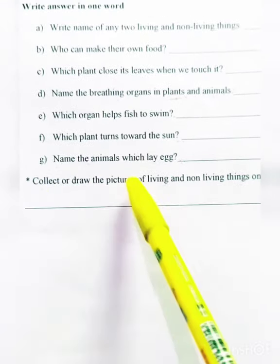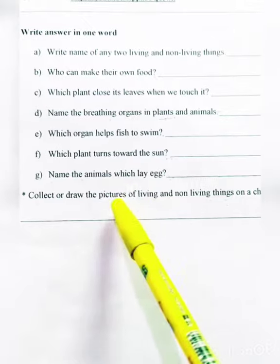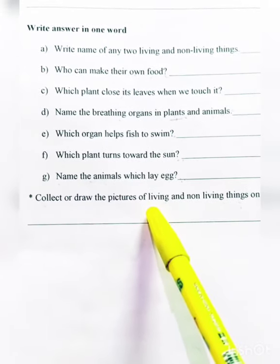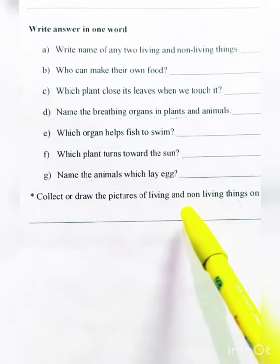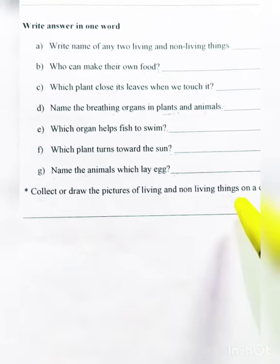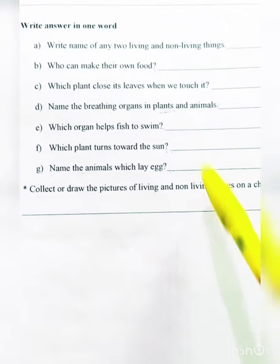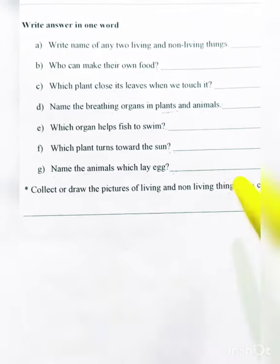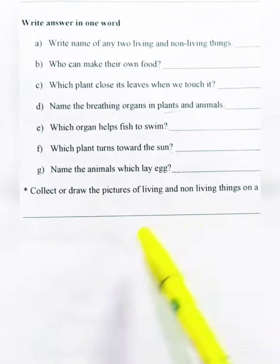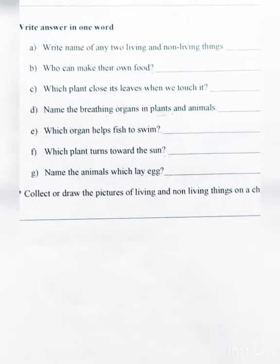Collect and draw pictures of living and non-living things on a chart paper. If you don't have pictures, you can draw and paste them on your A4 sheet or chart paper. Label each item and identify whether it is living or non-living.